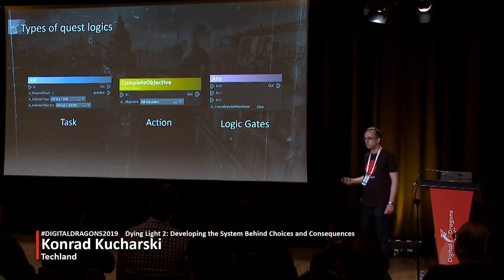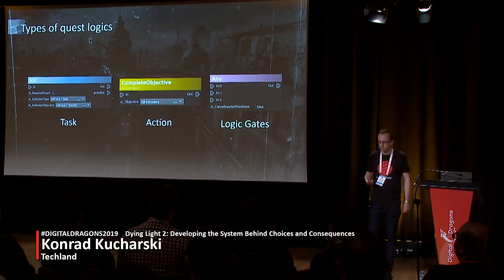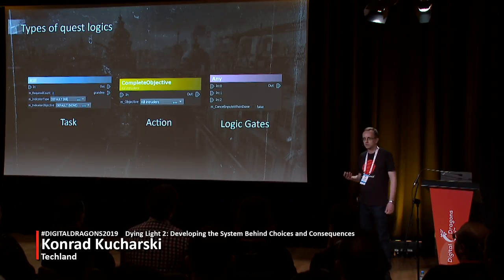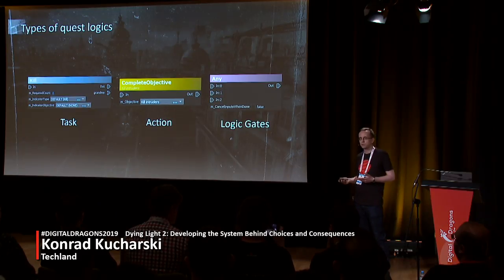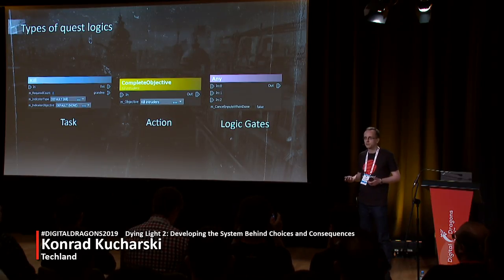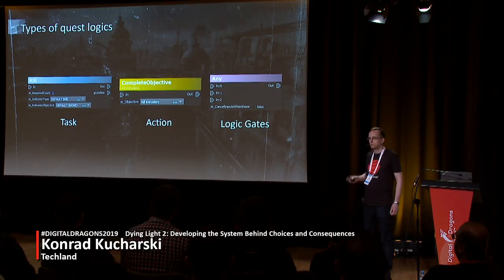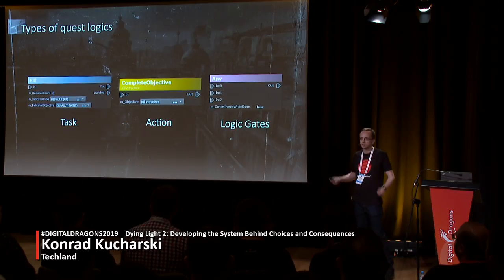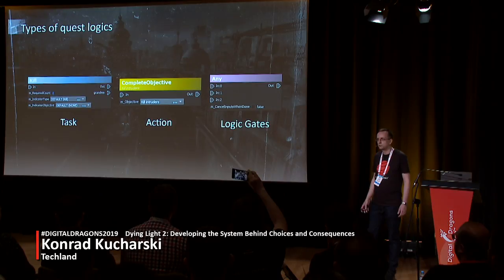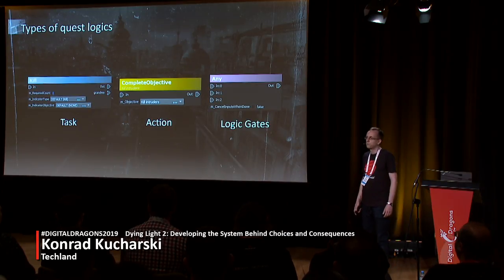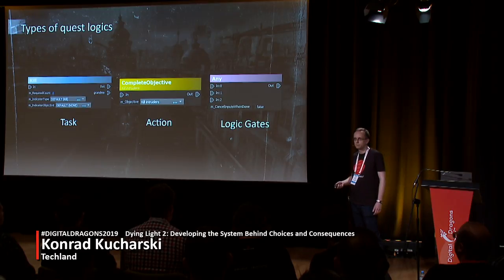Quest logics are supposed to be simple classes where each logic serves a single purpose. I split them into two categories: tasks and actions. Tasks are things players should do — they simply wait until a certain property of the world reaches a certain state, like a kill logic that waits until a certain NPC reaches the state of being dead. Actions, on the other hand, are supposed to modify the world — they execute during a single frame and finish themselves. A third, smaller but very important group consists of logic gates used to control the flow of graph execution. At that time we had over 150 different types of logics.